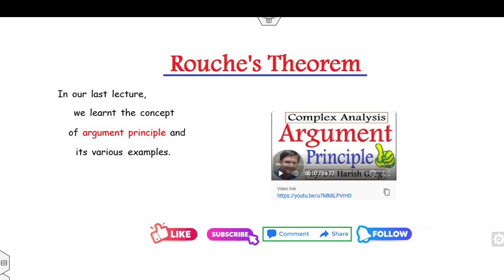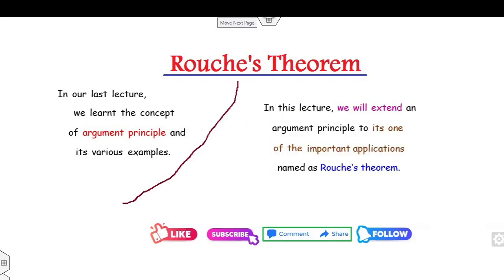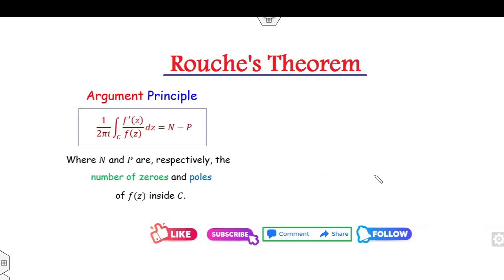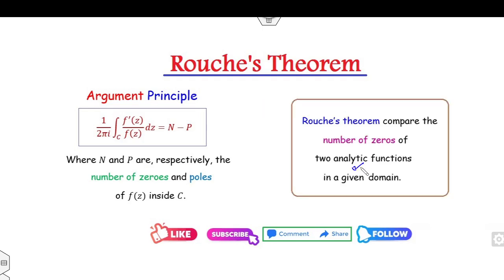So far we have learned the concept of the argument principle as well as its various examples in our last lecture. In today's lecture we will cover how we can extend the applications of the argument principle to Rouché's theorem. The argument principle states that for an analytic function f(z) defined inside a simple closed contour C, the value of (1/2πi) times the integral over C of f'/f equals n minus p, where n is the number of zeros and p is the number of poles. There is a need of only one analytic function. In Rouché's theorem, we will use two analytic functions and compare their number of zeros — that is the basic motivation for extending the argument principle to Rouché's theorem.